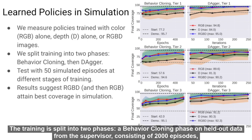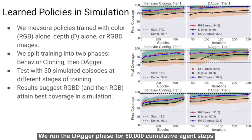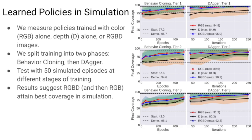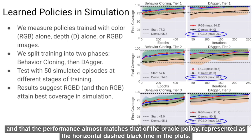The training is split into two phases: a behavior cloning phase on held-out data from the supervisor consisting of 2,000 episodes, and then a DAGGER phase where the agent takes steps into the environment and receives corrective labels. We run the DAGGER phase for 50,000 cumulative agent steps and at various checkpoints of training, we take snapshots and roll them out for 50 test time episodes. The results suggest that RGBD and RGB trained policies attain the best coverage performance in simulation, and performance almost matches that of the oracle policy, represented as the horizontal dashed black line in the plot.